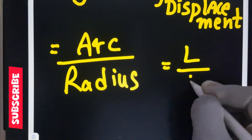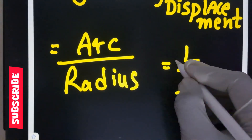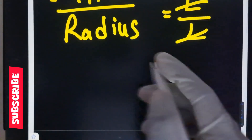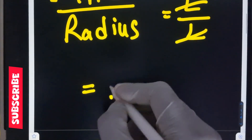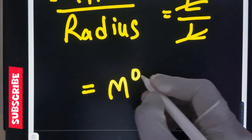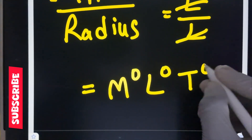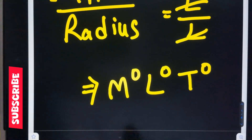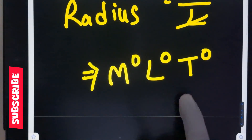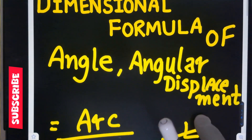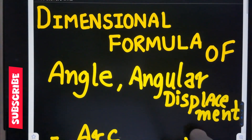So it is length by length — L by L cancels, giving M power 0, L power 0, and T power 0. Therefore, angle and angular displacement have no units and no dimensions.